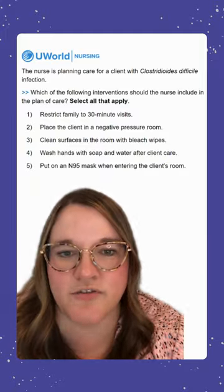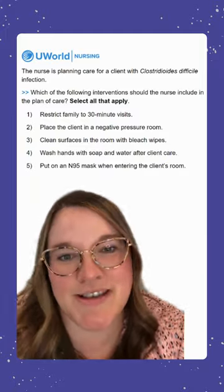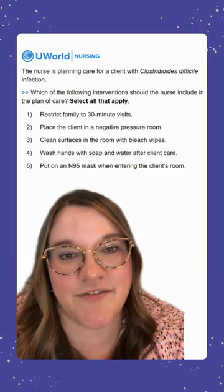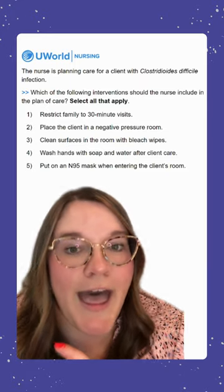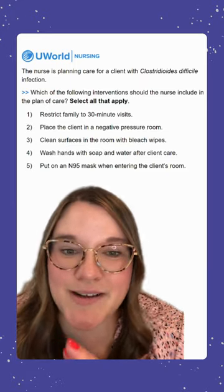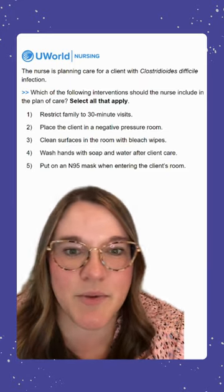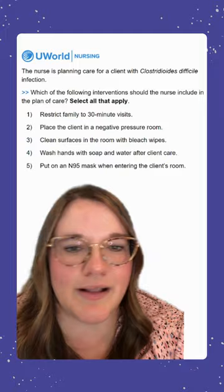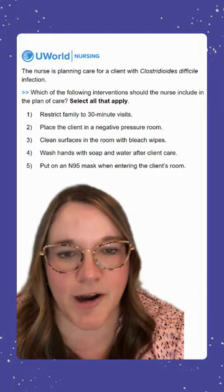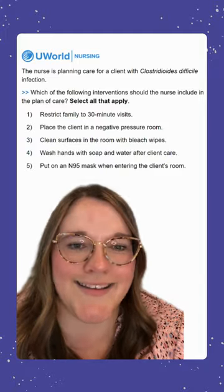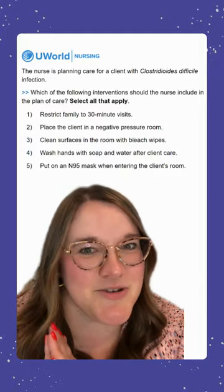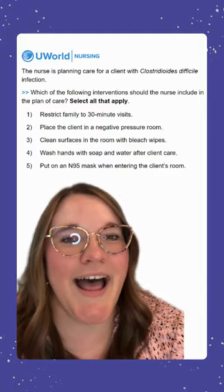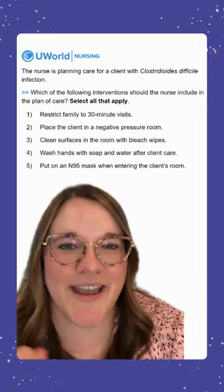Option five says to put on an N95 mask when entering the client's room. This is an incorrect option — it's something we would want to do for a client with airborne precautions, something like tuberculosis. So the correct options here were three and four.